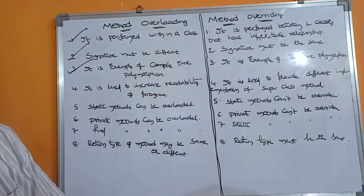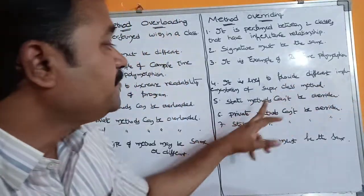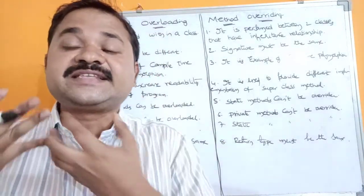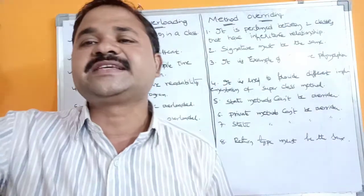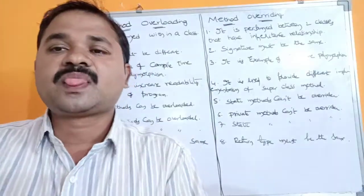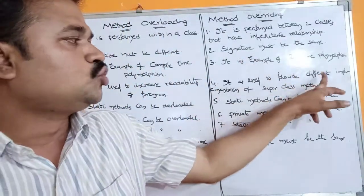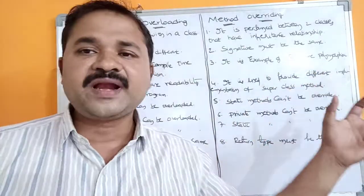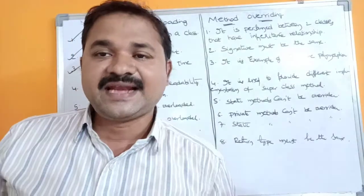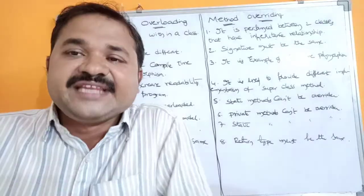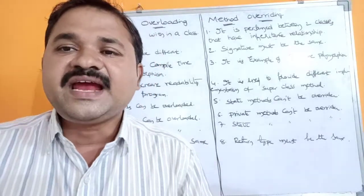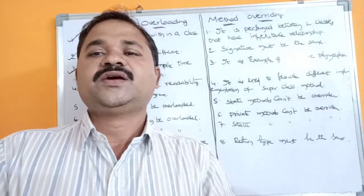Method overriding is used to provide different implementations of a superclass method. When method overriding is needed: if the derived class is not satisfied with its base class method definition, the derived class can provide its own implementation. So method overriding is mainly useful to provide a different implementation for the superclass method in the subclass — if the child class is not satisfied with the parent class method definition, it can provide its own definition using method overriding.